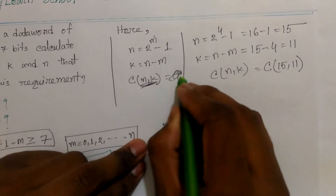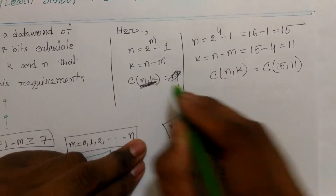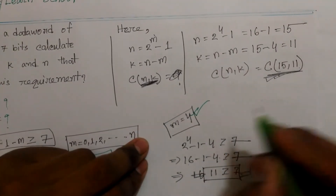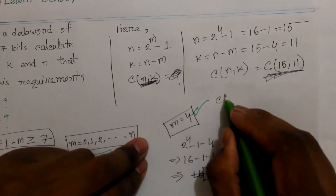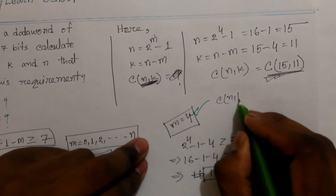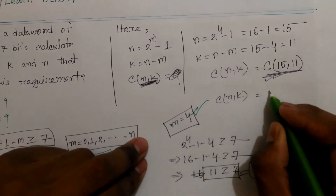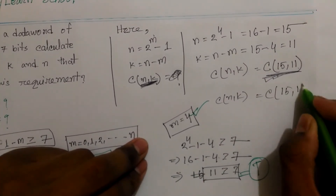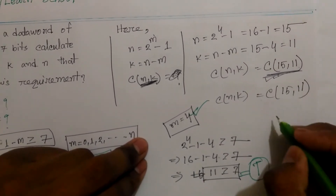k is equal to n minus 3, n minus 3, n minus 1, is equal to n minus 3.